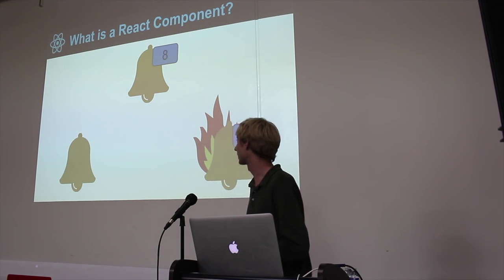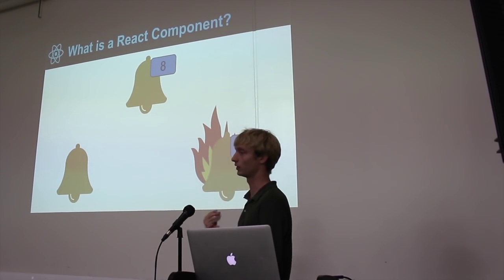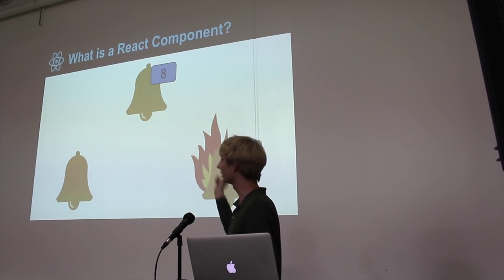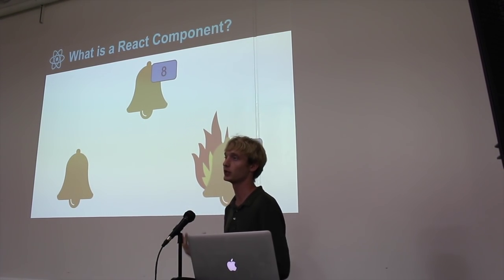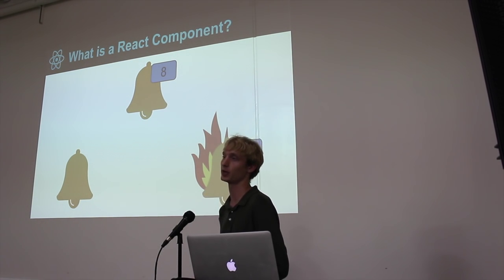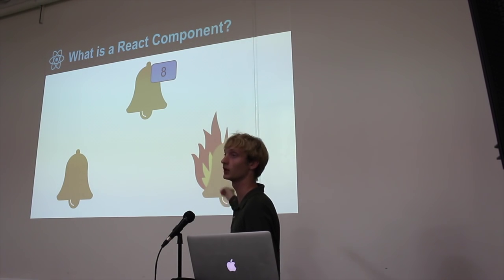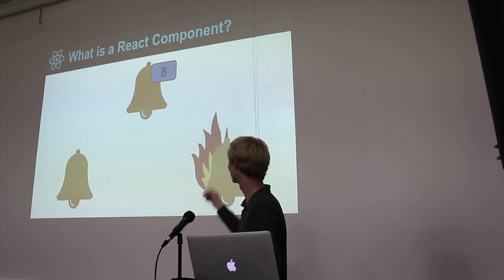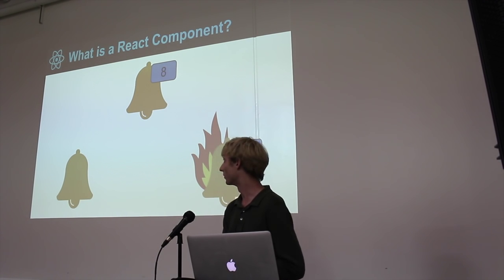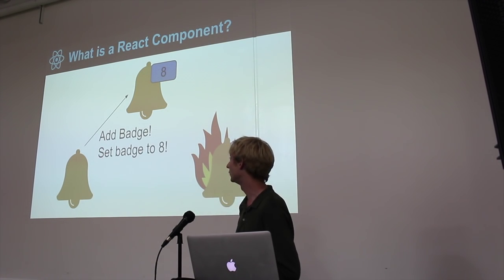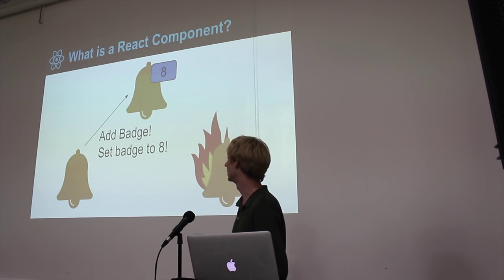Backing up a little to what React is specifically — suppose a designer gives you three items: display notifications. If there are no notifications, display a bell. If there are eight notifications, display a bell with a badge showing the number eight. And if there are more than 99 notifications, the badge should say '99 plus' and put a fire behind the bell. In an imperative API, when transitioning between states — say from the bell to the bell with a badge — you say 'add badge' and 'set the badge to eight.'